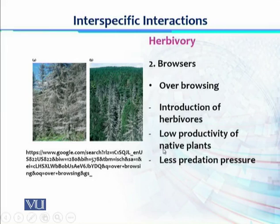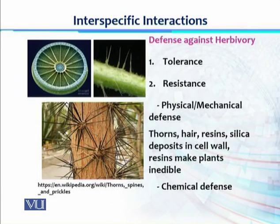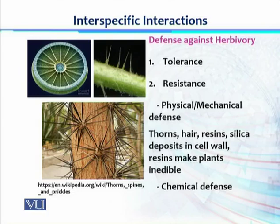To counteract over-browsing, plants have defense strategies against herbivorous animals. The first is tolerance — plants expand their tolerance range by enhancing their capacity to regrow and replenish after grazing or browsing. The remaining leaves and shoots regrow very fast and replenish the over-consumed plant material.